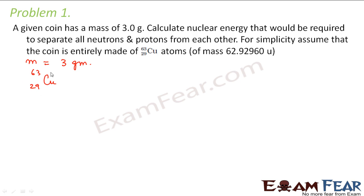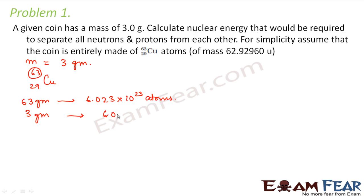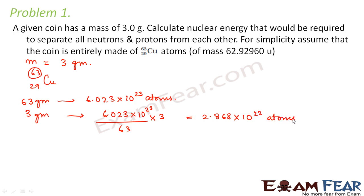Now, what is the number of atoms in the copper? Here you can see that 63 grams of copper — 63 is the mass number — so 63 grams of copper contains 6.023 × 10²³ atoms. Therefore, 3 grams of copper would contain (6.023 × 10²³ / 63) × 3, which equals 2.868 × 10²² atoms. So these many atoms will be present in 3 grams of the copper coin.